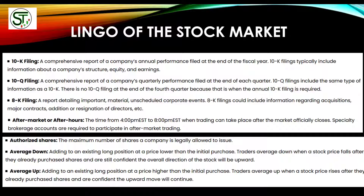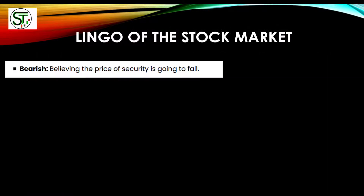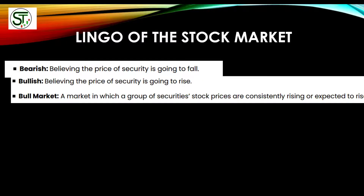Average up is the opposite — if you bought Apple at $100, it goes up to $110 and you buy more, then up to $120 and you buy more, you're averaging up. Bearish means you believe something is going to go down — for example, if Tesla is at $800 and you think it'll drop to $700, you're bearish on it. Bullish is the opposite — if you think Tesla will go up to $1,000, you're bullish on the stock.